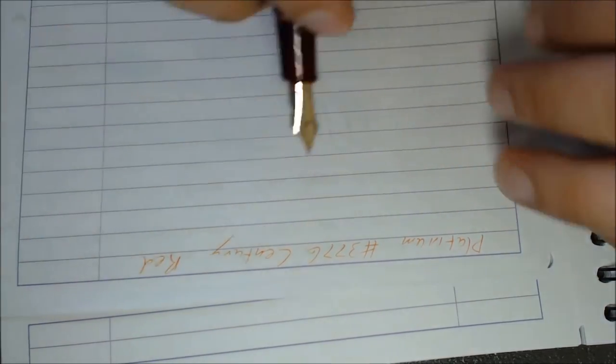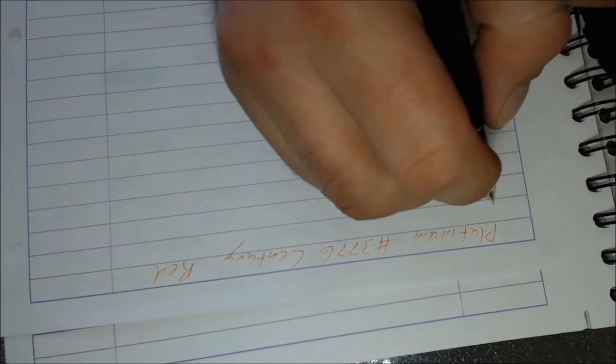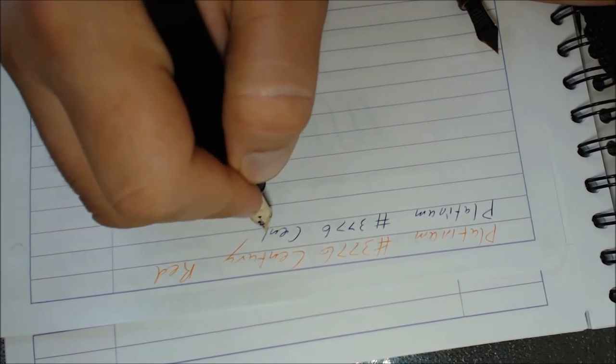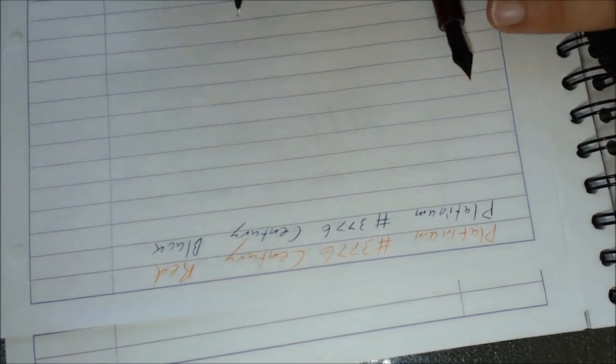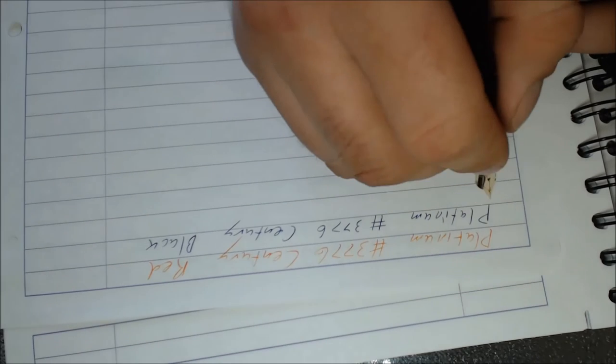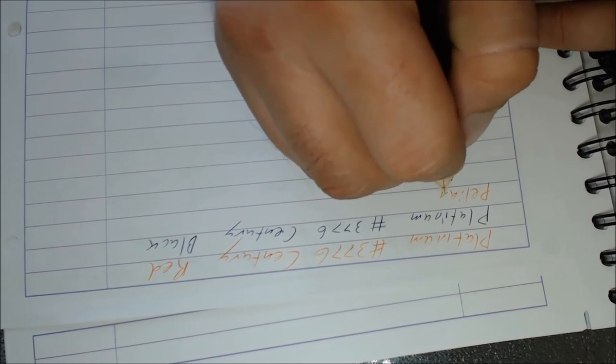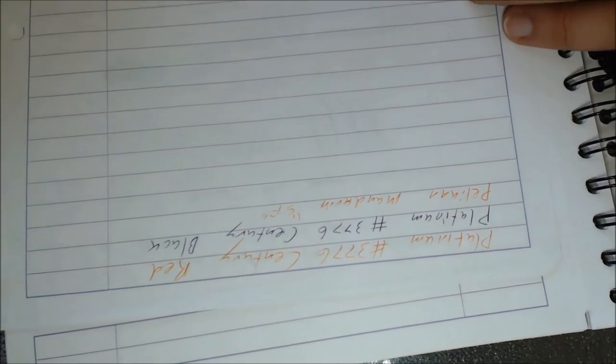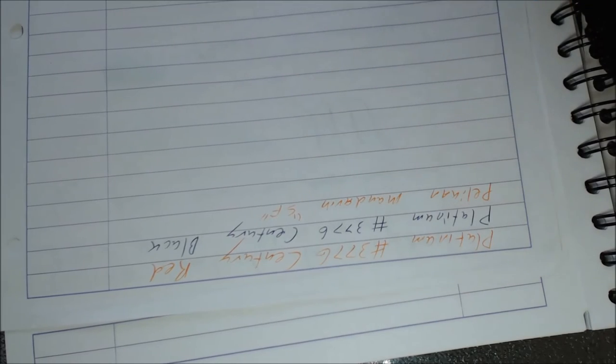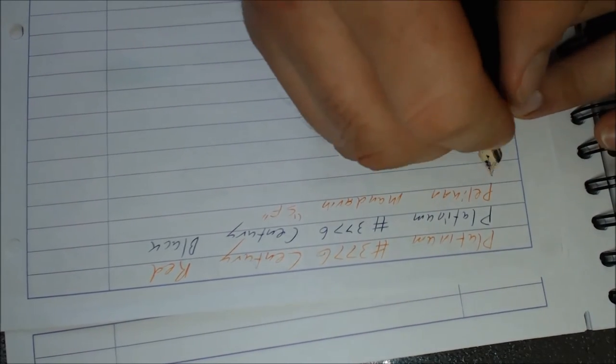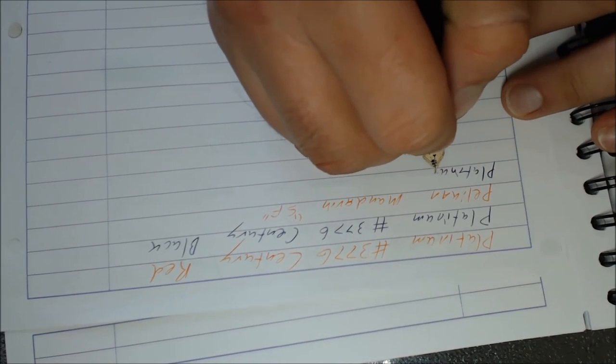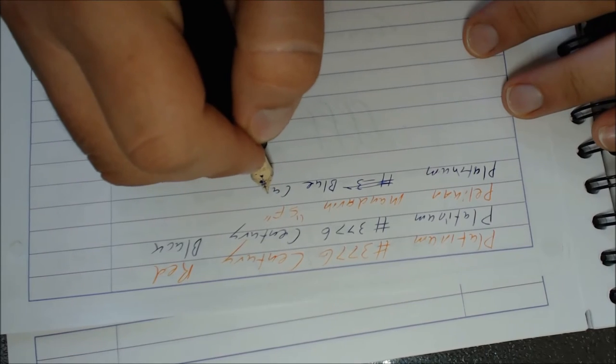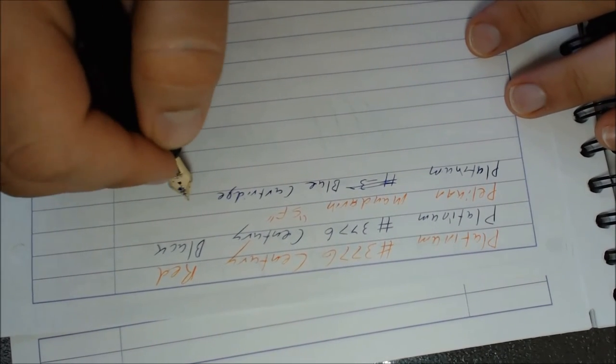Platinum 3776 Century. This is the red. This has I think it's Pelikan Mandarin with a soft fine nib. And this one has, oh this is a good question, ah this is a cartridge. So this is the Platinum Blue cartridge with a soft fine nib.